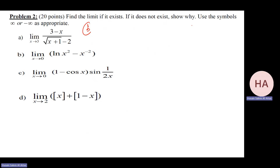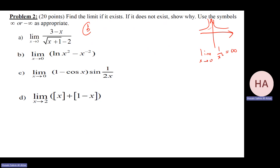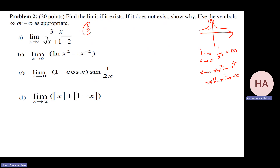Notice one over x squared: as x goes to zero, one over x squared goes to plus infinity. Also, the natural log of x squared is always negative as x goes to zero, going to minus infinity. So we have minus infinity minus infinity, which is minus infinity. This is part b.